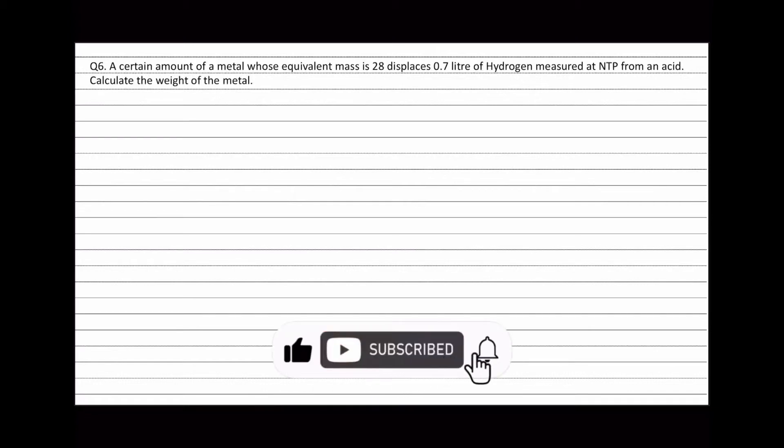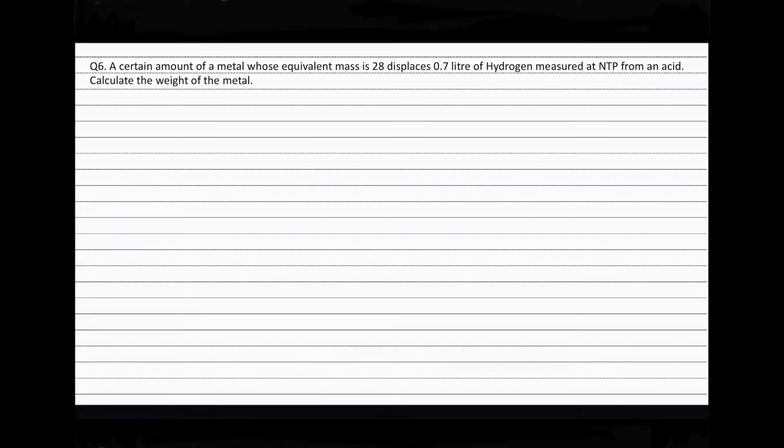Question 6. A certain amount of a metal whose equivalent mass is 28 displaces 0.7 liter of hydrogen measured at NTP from an acid. Calculate the weight of the metal.